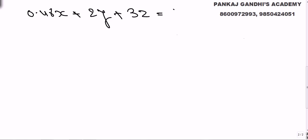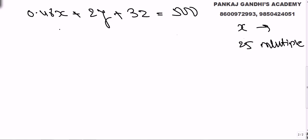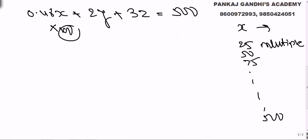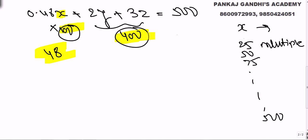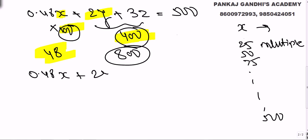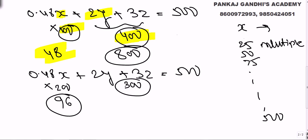So x must be a multiple of 25 — it can be 25, 50, 75, up to 500. Trial and error: if we take x = 100 stamps of 0.48, that gives 48 rupees, remaining 400 stamps. Even if we take all 400 at 2 rupees, that's 800 rupees — way over 500. Try x = 200: that gives 96 rupees, remaining 300 stamps. Even all at 2 rupees gives 600, and 600 + 96 crosses 500.